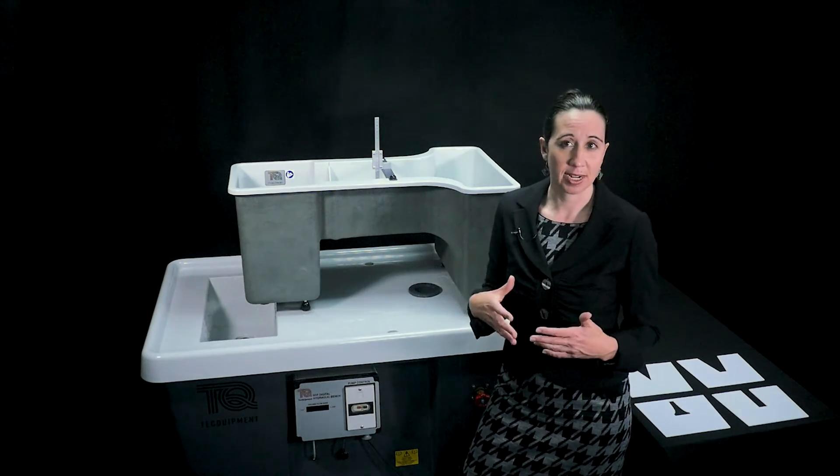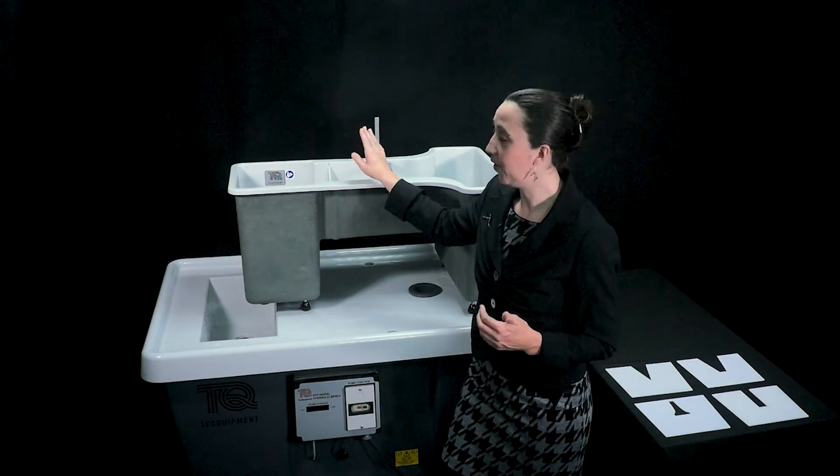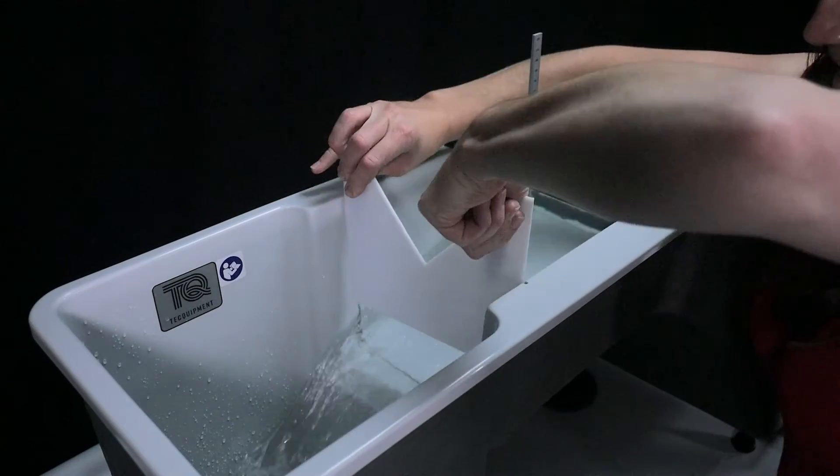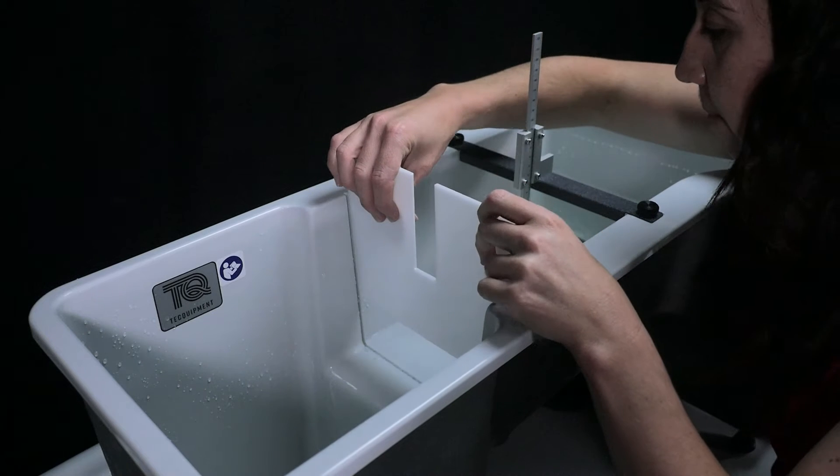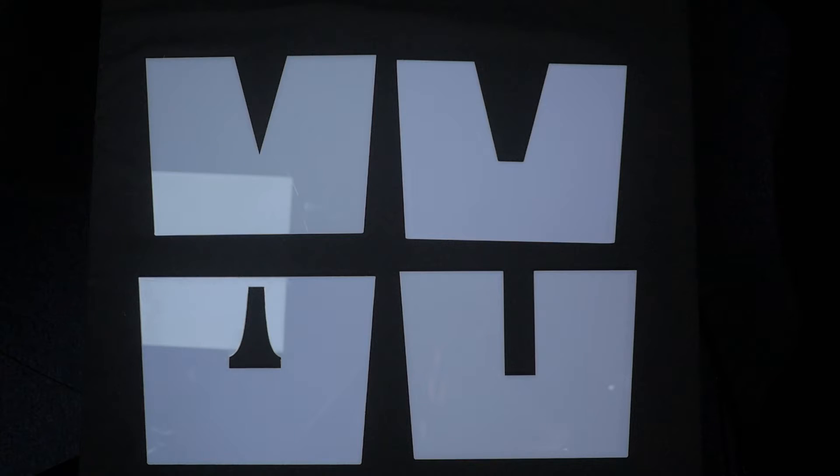Five weir plates are supplied that fit into the sealed groove in the channel section. Two V-shaped notch weirs, a trapezoidal Cipolletti weir, a linear head flow weir, and a rectangular notch weir.